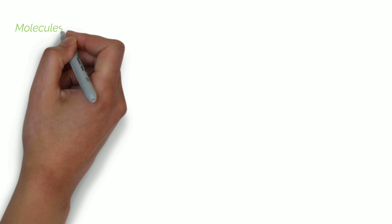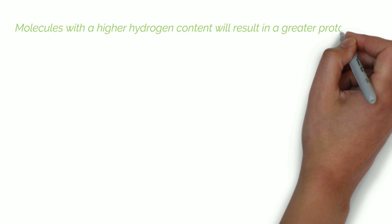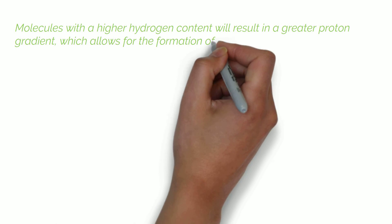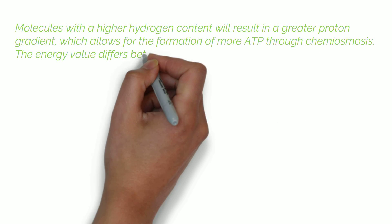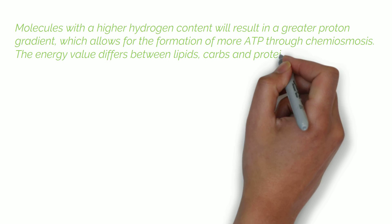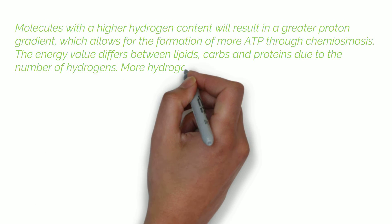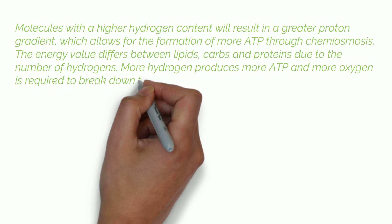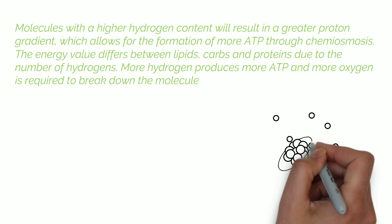Molecules with a higher hydrogen content will result in a greater proton gradient, which allows for the formation of more ATP through chemiosmosis, which we will cover in more detail in the next video. The energy value differs between lipids, carbohydrates and proteins due to the number of hydrogens — more hydrogen produces more ATP, and more oxygen is required to break down the molecule.